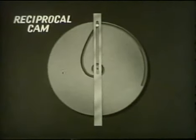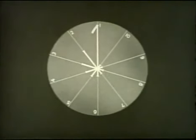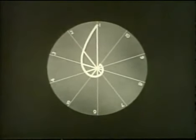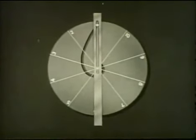In the reciprocal cam, the output is equal to one divided by the input. The working surface is constructed by plotting points on radii. This distance on line one represents one. Half this distance on line two represents the reciprocal of one, or one half. One third on three, and so on. With this curve cut as a groove in a disc cam and a follower added, the cam output will be the reciprocal of any input.